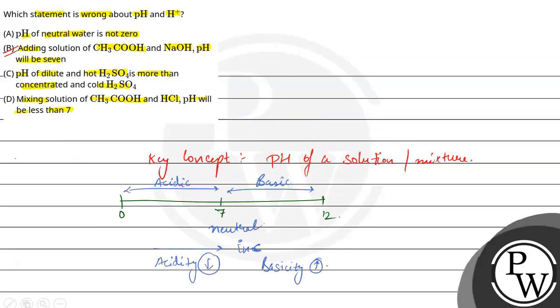So the correct answer is B. Adding solution of acetic acid and NaOH, pH will be 7 - this is wrong, pH will not be 7. I hope you understood it well. Best of luck.